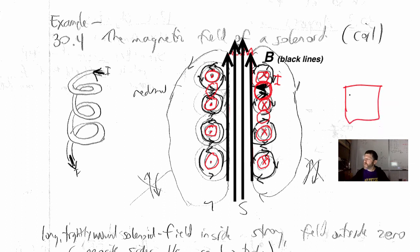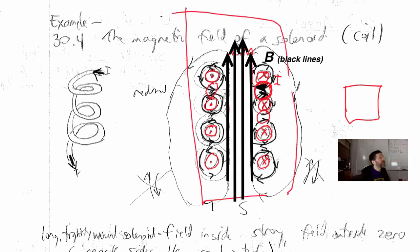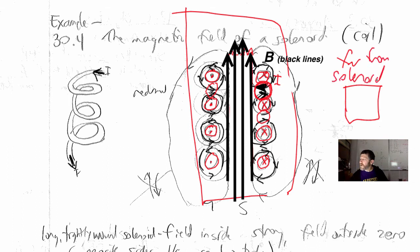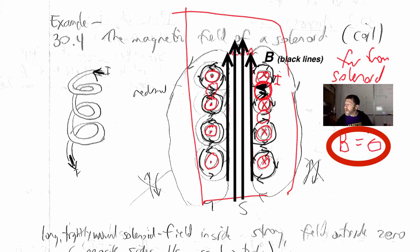You can justify B = 0 outside as follows: all the currents are going in on one side and all going out on the other. Looking at the whole region, the net current is zero, so far from the solenoid the magnetic field is zero. For long solenoids, we assume the field is zero outside, and now we'll figure out the field inside using Ampere's law.